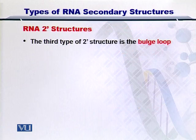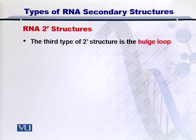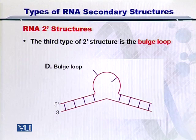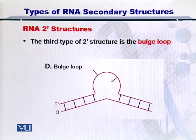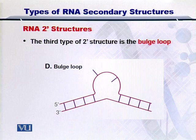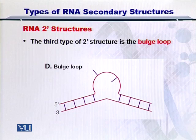Now we will take a look at another form of the RNA secondary structure — this is called the bulge loop. In this structure, the 3' end of the RNA molecule comes towards the 5' end and the intermediary nucleotides make bonds with each other. However, somewhere in the process, some of the nucleotides remain unpaired.